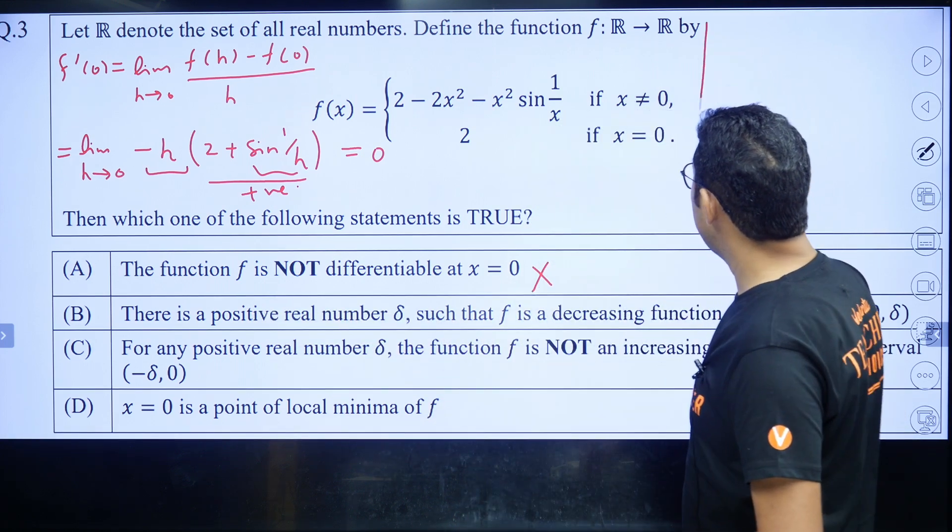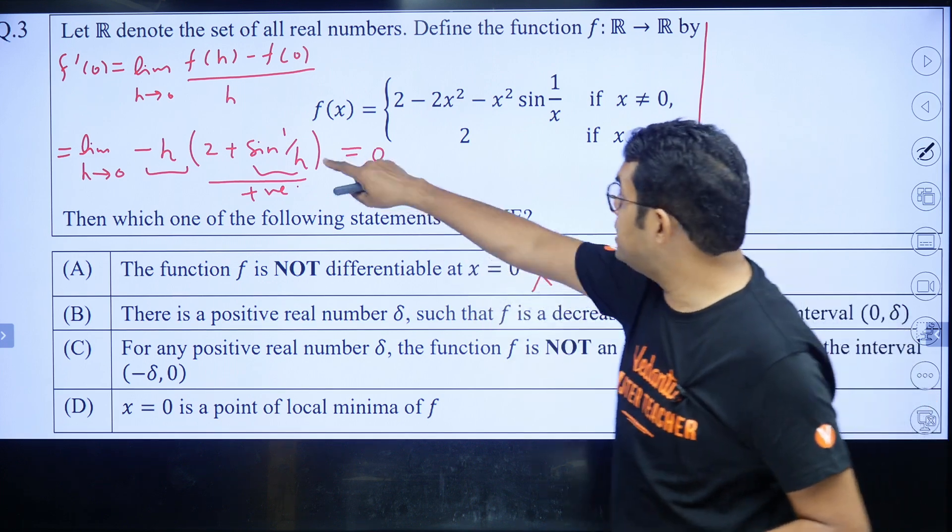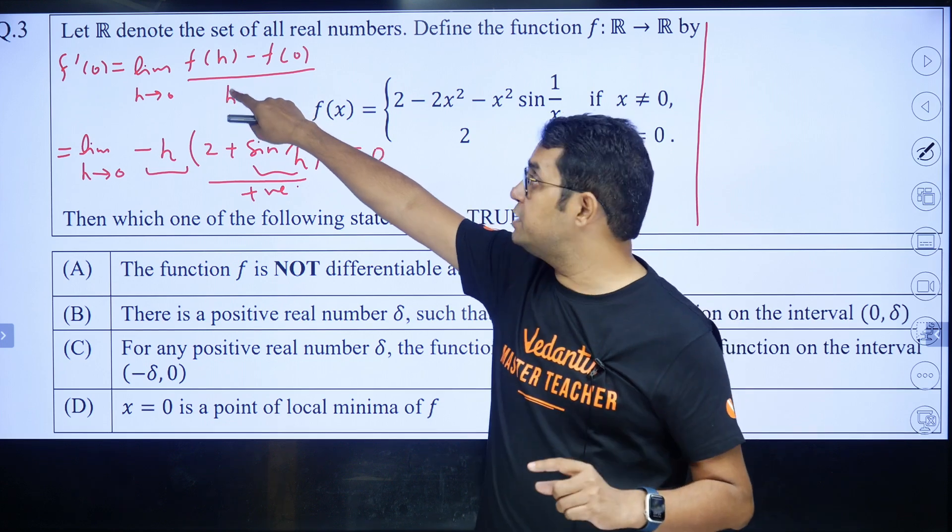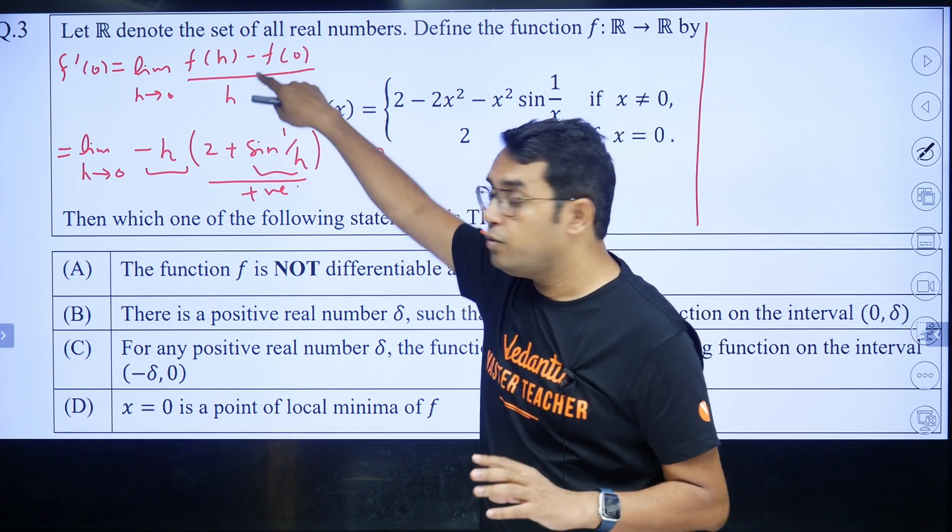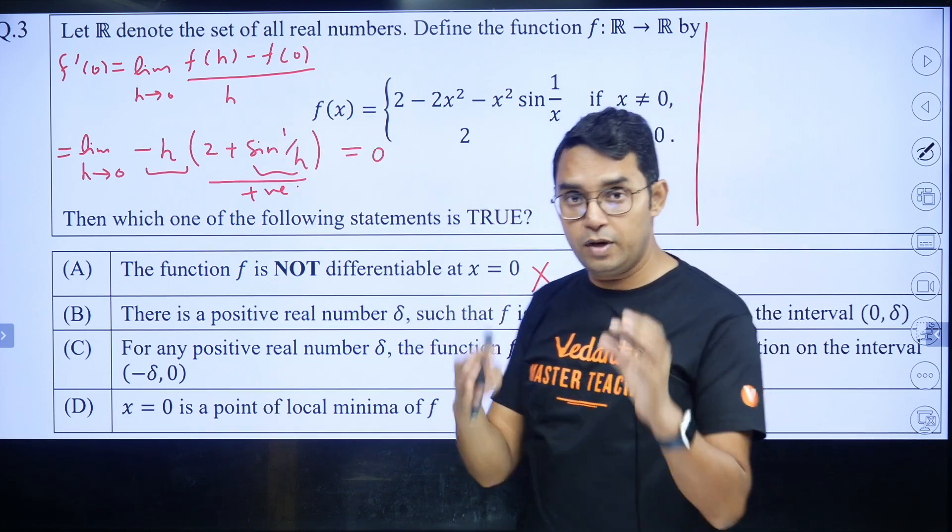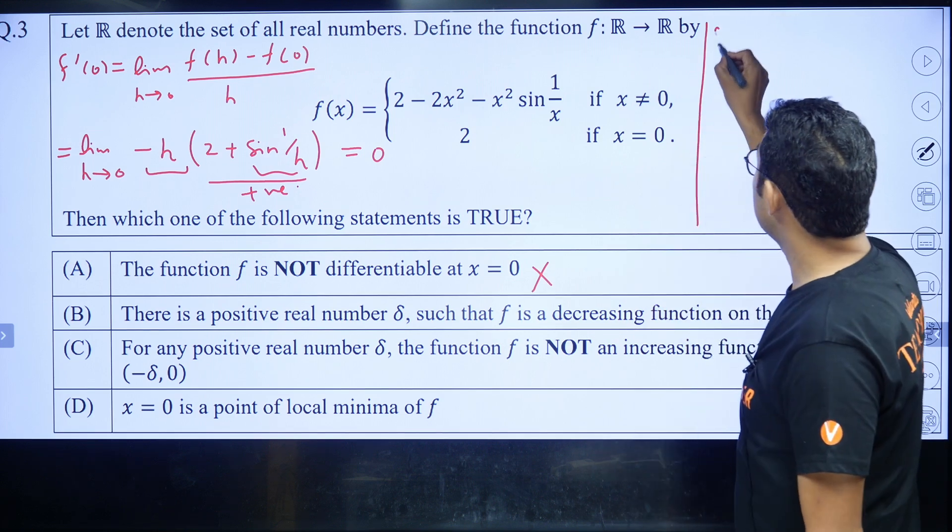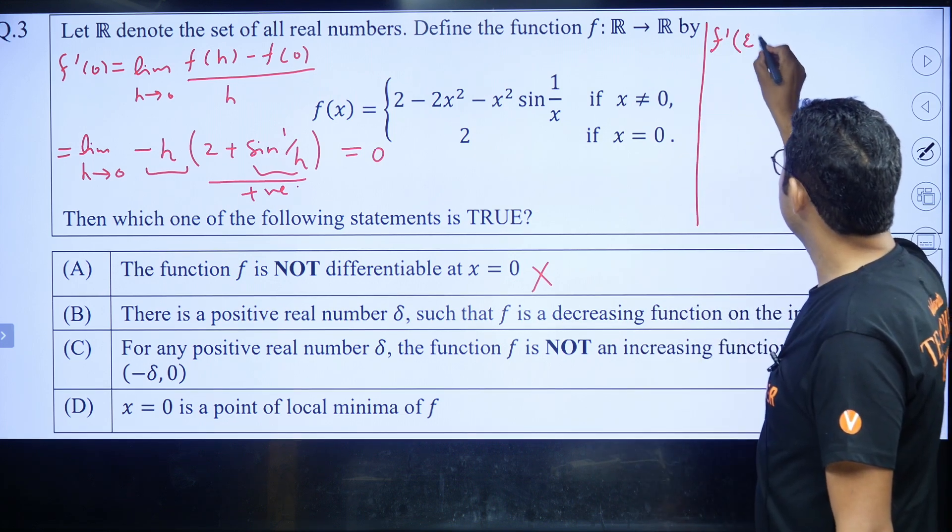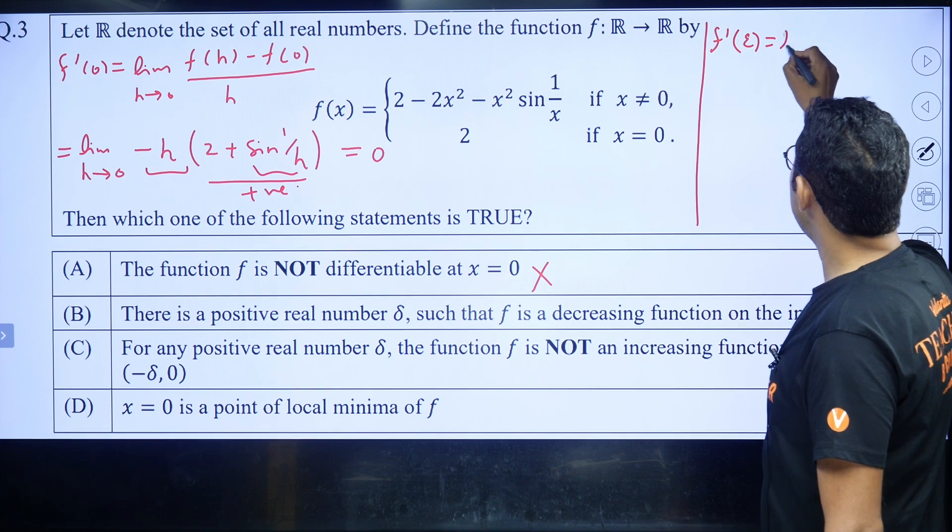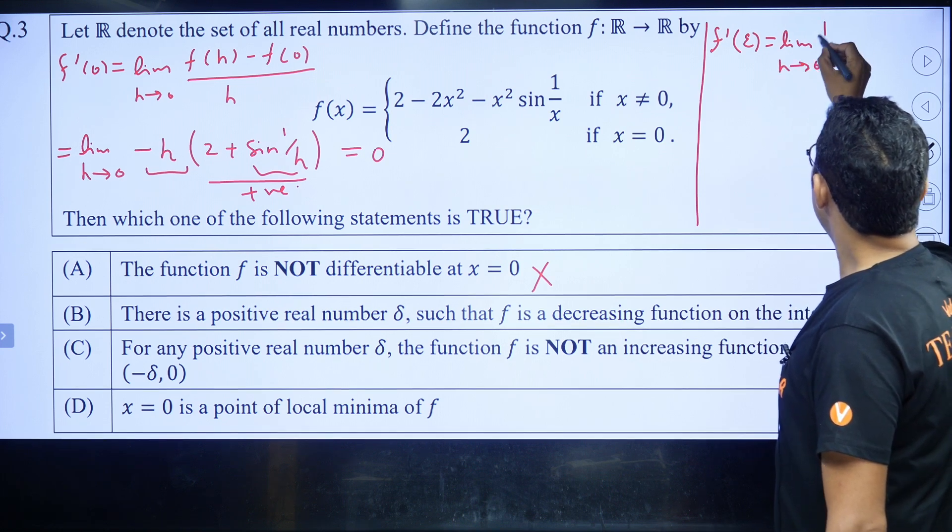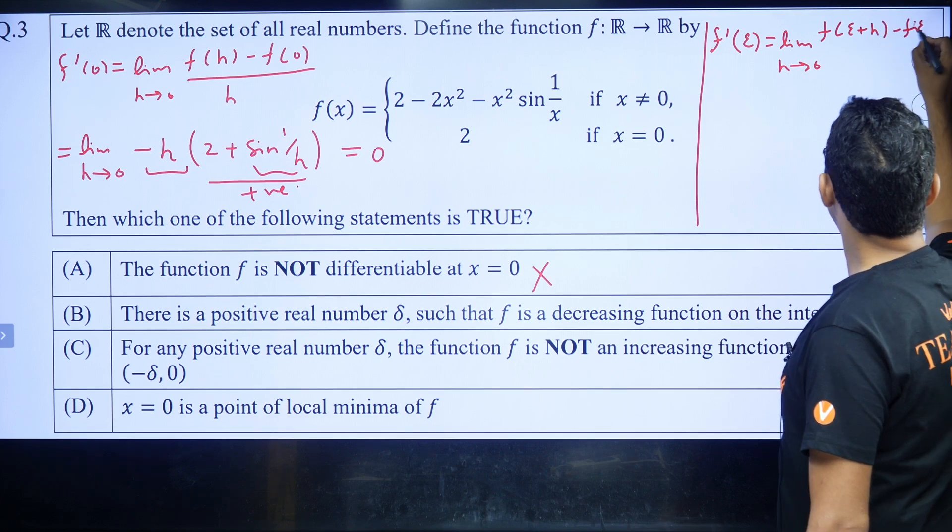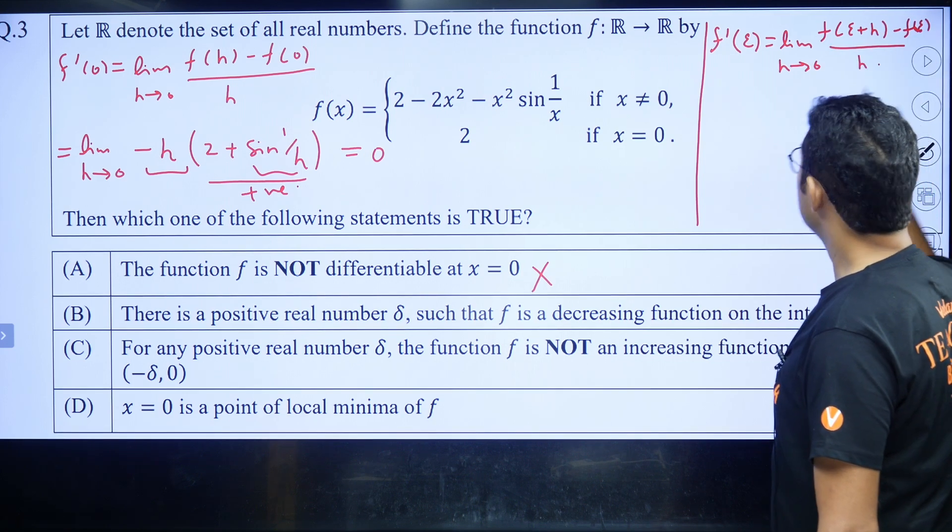Whenever you are finding the derivative at a point other than 0 in this type of question, you are not supposed to use first principle at 0 or use the function value at 0. Let me give you an example. Suppose you are finding the derivative at a very small number, say ε. Then, by first principle, it would be limit h → 0 of [f(ε + h) - f(ε)]/h.